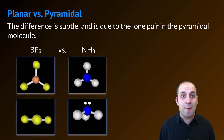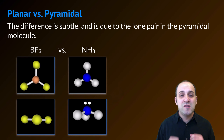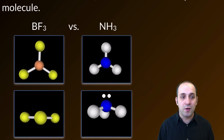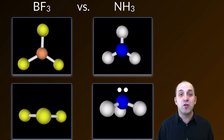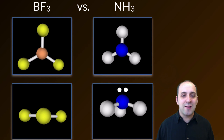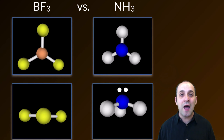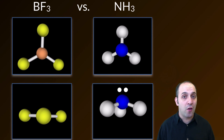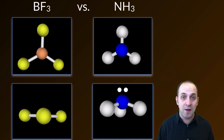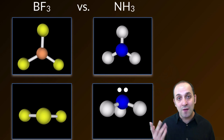Let's touch on the difference between trigonal planar and trigonal pyramidal shapes a little more in depth. The difference is somewhat subtle, but it's due to the presence of the lone pair on the pyramidal molecule. What I've shown here are representations of a trigonal planar molecule — boron trifluoride — and a trigonal pyramidal molecule — ammonia. Looking at them straight on, you actually can't really tell a difference. But if we rotate these molecules so that we have the central atom in the middle, you can see that in the pyramidal molecule, the central atom is at a higher elevation than the three atoms it's bonded to, whereas in a trigonal planar molecule, they're all in the same plane. That's due to the lone pair of electrons on the central atom in the pyramidal molecule, which gives us the characteristic pyramid shape instead of a flattening of all atoms into the same plane.